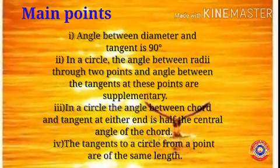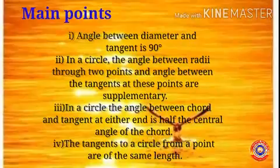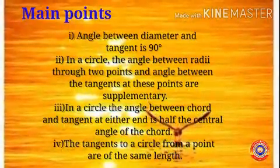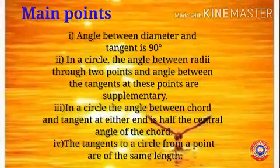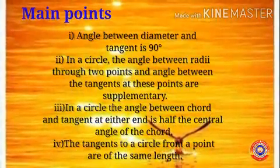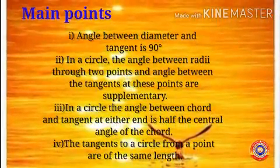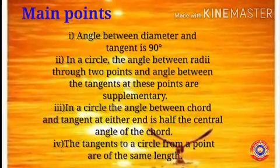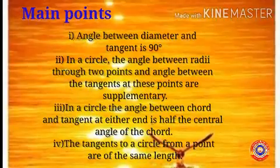in a circle, the angle between radii through two points and angle between the tangents at these points are supplementary. Third one, in a circle, the angle between chord and tangent at either end is half the central angle of the chord.